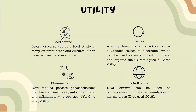Ulva lactuca has many uses. In terms of utility, it can be used as a food source, as it is served as a food staple in many different areas and cultures — it can be eaten fresh or dried. Foragers sometimes dehydrate this specimen to concentrate its umami component. For biofuel, a study by Dominguez and Laurent in 2019 shows that Ulva lactuca can be used as a valuable source of bioethanol, which can serve as an adjuvant for diesel and organic fuels.